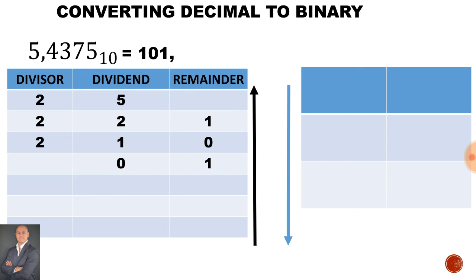Now to deal with the second part of the decimal number: 0.4375. Where the line is, just imagine that there is an imaginary comma, and also imagine that when we type the value into our calculator, there is an imaginary 0 in front of the comma. This column is used for the remainder, and when we read the answer, we read from the top going down to the bottom. Make sure you have your calculator so you can practice this with me.